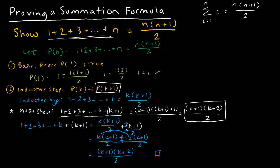Quite often at the end of the proof you'll see people summarize: because this is true and this is true, then I've shown my 'must show.' So therefore, p of n is true for all n that are positive integers.